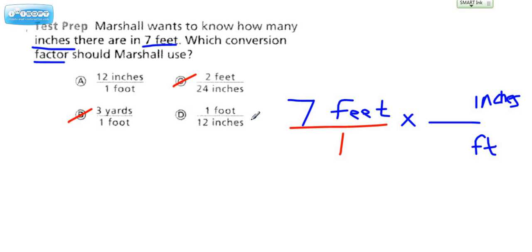Because remember, one of these we have to pick to multiply with 7 and end up getting our answer in inches. And if we choose this one, let's try it, 12 inches for every 1 foot,